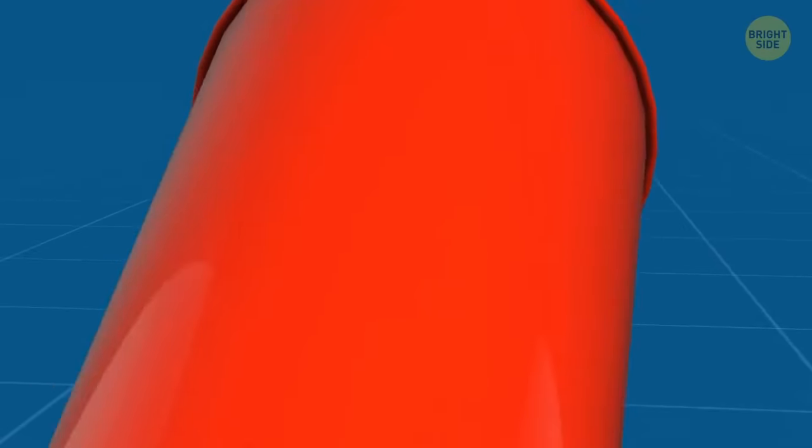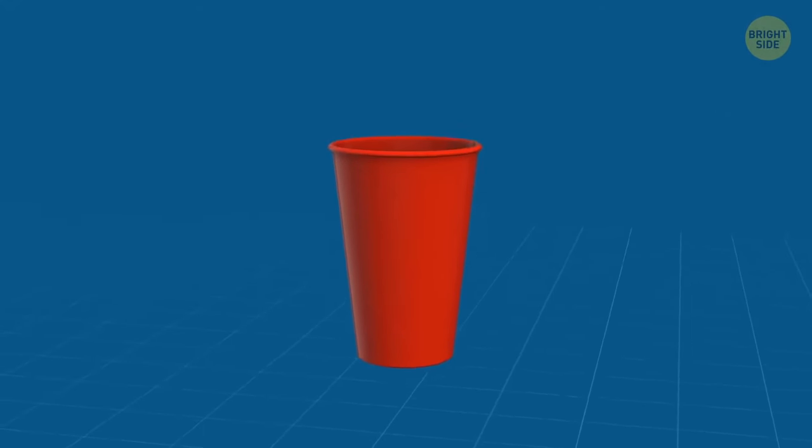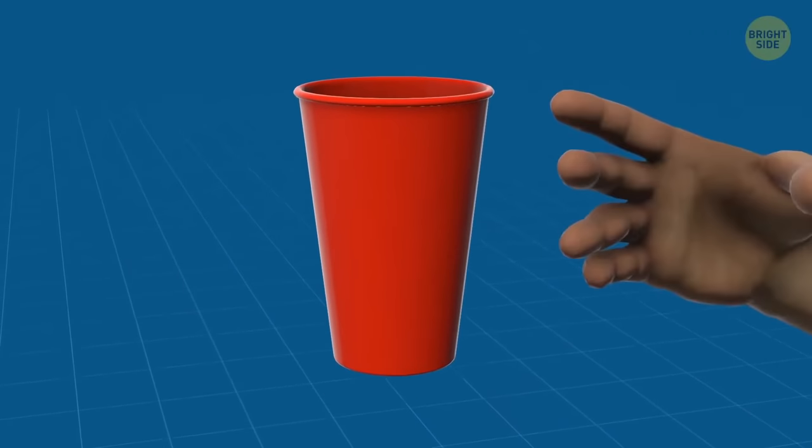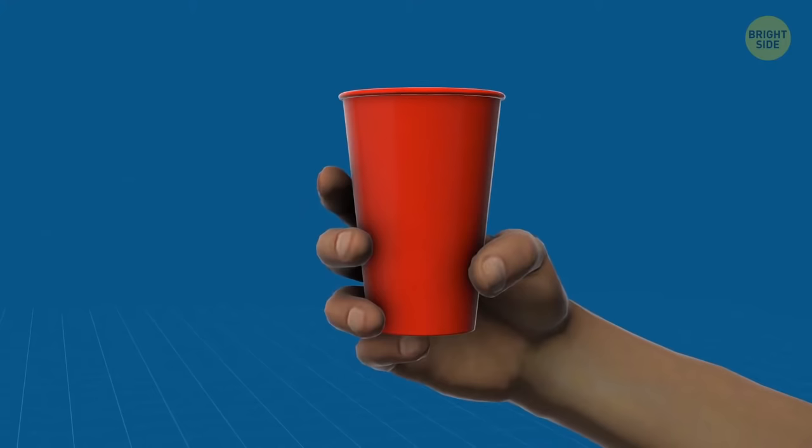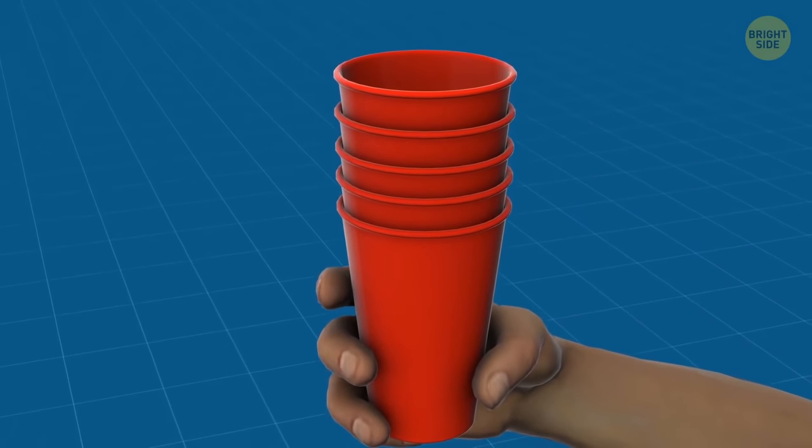All the disposable cups look the same. The secret here is the special shape that lets you enjoy your drink easily. The top is always wider for the nose to fit in while you're drinking, and the bottom is always narrower so anyone can hold it, even if the hand is small. Also, the width difference allows the cups to stack.